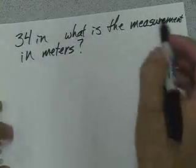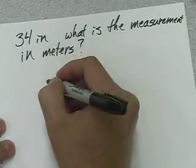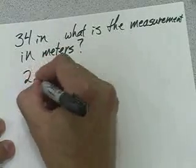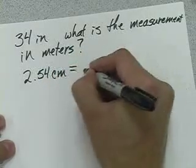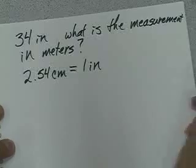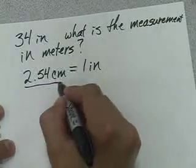This is a two-step dimensional analysis because our conversion factor, we know that 2.54 centimeters equals 1 inch. So we can use one of two conversion factors.